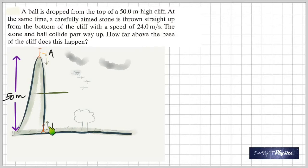We do not know where they collide. How far above the base of the cliff does this happen? We need to find this distance. Let's take this as y, and the other distance is 50 minus y, because if this is y and the total is 50 meters, this one should be 50 minus y.